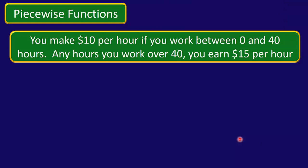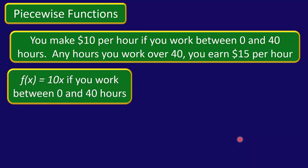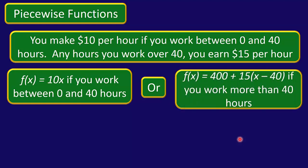Now let's think about piecewise functions because sometimes we have to evaluate those. A piecewise function comes about with a situation like this: suppose you take a job where you make $10 an hour if you work between 0 and 40 hours. And if you work more than 40 hours, every hour above 40 you get time and a half — in other words, $15 per hour instead of $10.